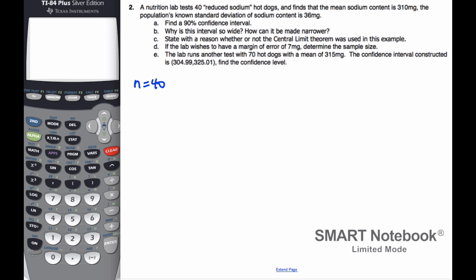And I find the mean content is 310. Well, the mean then is 310. The population's known standard deviation of sodium content is 36 milligrams. So my standard deviation equals 36 milligrams. Now, knowing the population standard deviation is quite rare, but these are set up at the beginning of our statistics aspect of this unit, so we're going to know it for a little while.